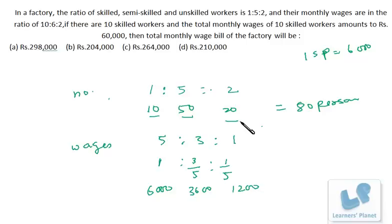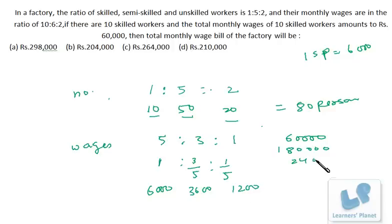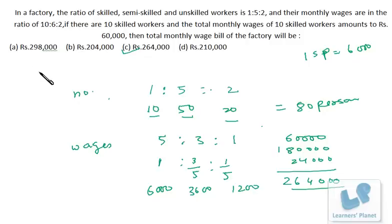Now we know the number of persons — skilled, semi-skilled, and unskilled — and we know the wages. So: 10 skilled persons at 6,000 each gives 60,000. 50 semi-skilled persons at 3,600 each gives 1,80,000. 20 unskilled persons at 1,200 each gives 24,000. The total is 2,64,000, which is option C.